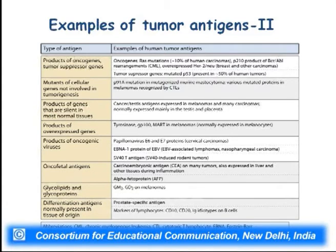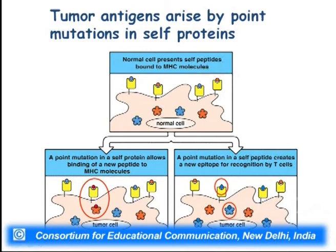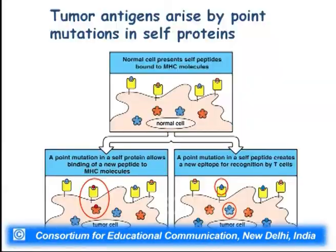Tumor antigens arise because of point mutations in cell proteins, allowing binding of a new protein. This new protein is sometimes recognized as self or not. If not recognized as self, the immune system attacks the tumor cell; if recognized as self, it evades the immune response. Reactivation or overexpression of any gene also causes tumor cells to be recognized and killed. There is an adaptive immune response to tumors — cytotoxic T lymphocytes are activated — and CD8 CTLs are the key players in killing.